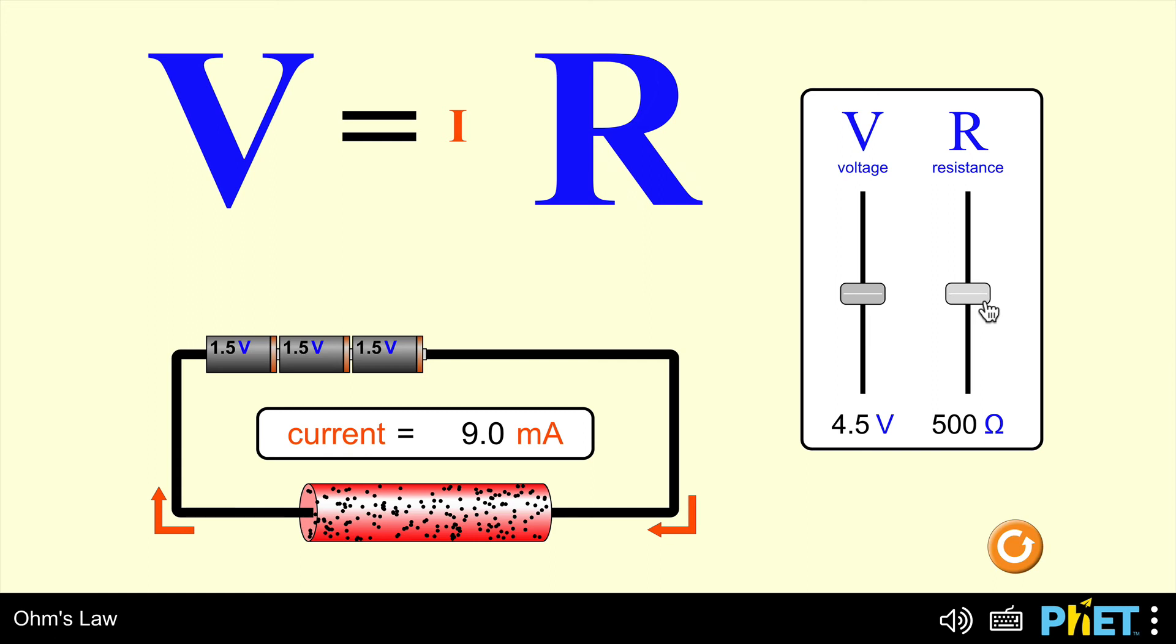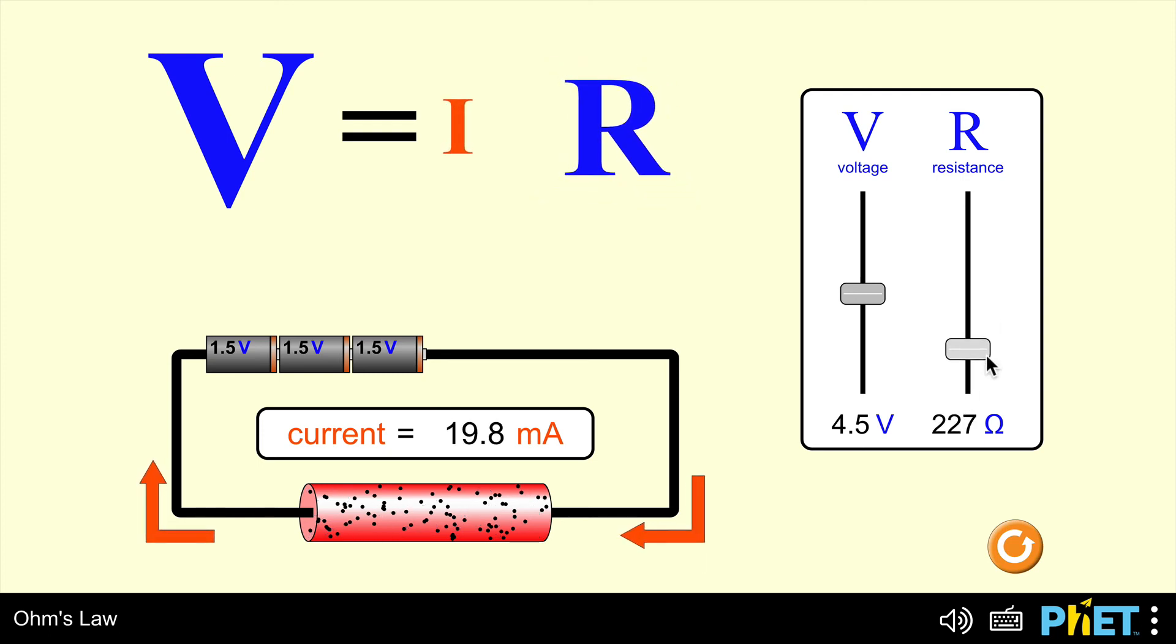Let's see if that works out. Now find that 250 ohms, there it is. So 250 ohms, I get 18 milliamps. So doubling the resistance, I get half the current or halving the resistance, I get double the current. That's inversely proportional.